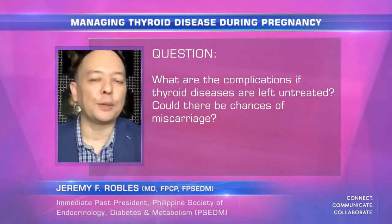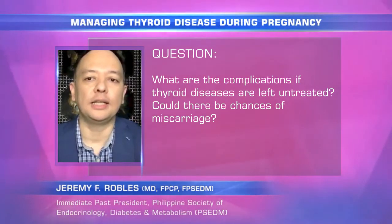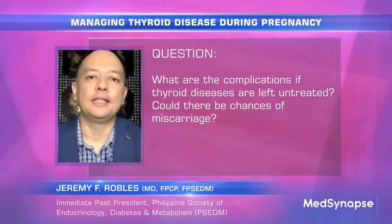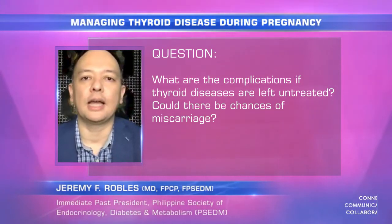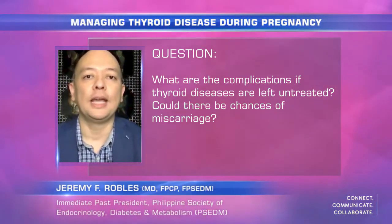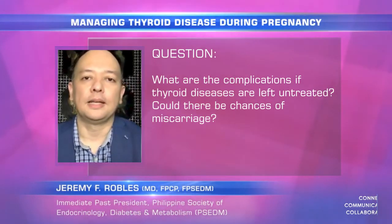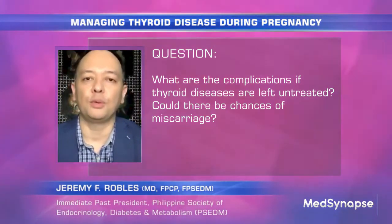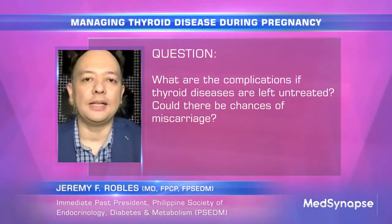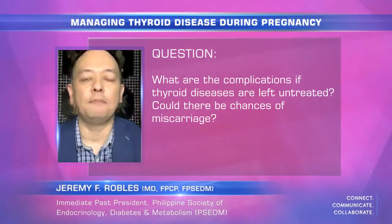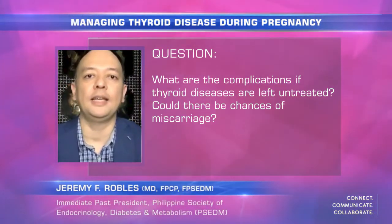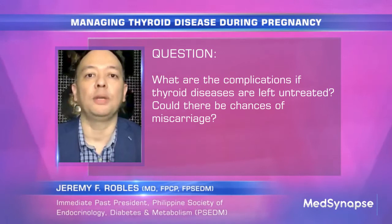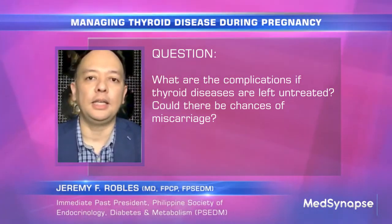Maternal hypothyroidism has often been closely related to fetal hypothyroidism — sometimes we refer to this as cretinism. This cretinism can occur in babies that are hypothyroid, and therefore the neurodevelopmental progress of the patient is affected in hypothyroid mothers. In the first few weeks, the baby is really dependent on the mother for thyroid hormones, not until the second trimester when the baby can actually make their own thyroid hormone at about 18 to 20 weeks.